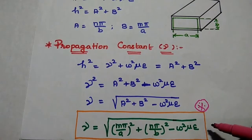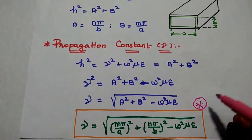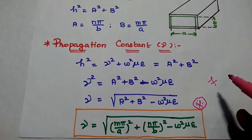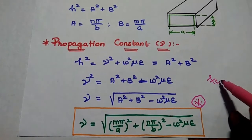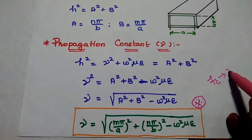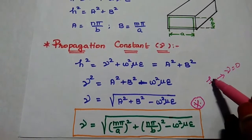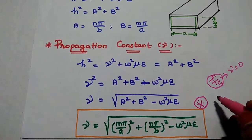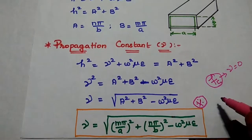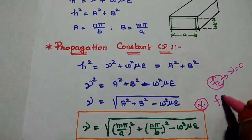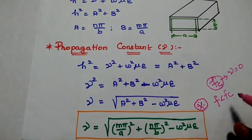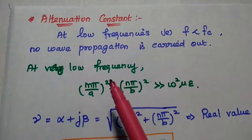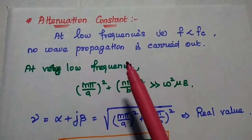In this concept, frequency plays a vital role. At a particular frequency, that is the cutoff frequency, this gamma value becomes zero. We are going to analyze two conditions: if the frequency is less than the cutoff frequency, and if the frequency is greater than the cutoff frequency. The next characteristic is the attenuation constant.